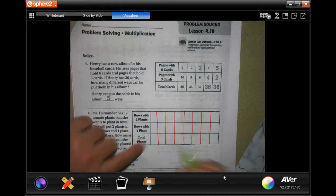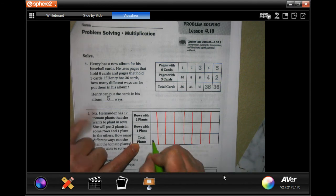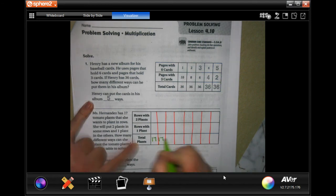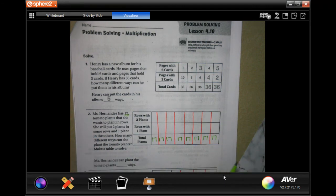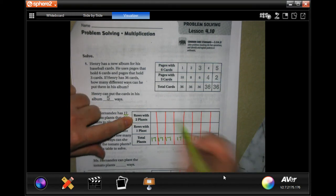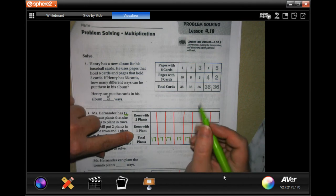So we know that every single time there's going to be 17 because she has 17. Now I know that I can do two times eight is 16 plus one is 17.